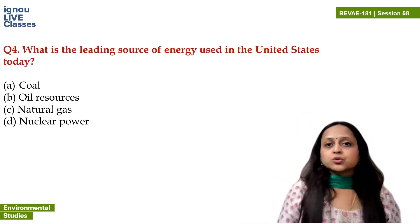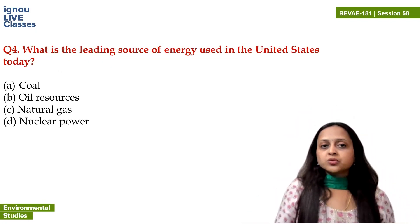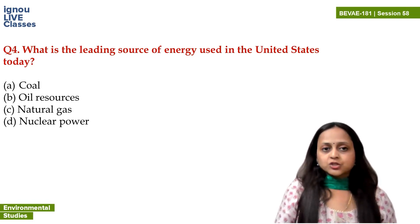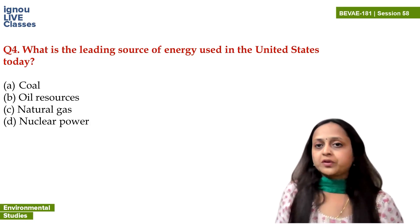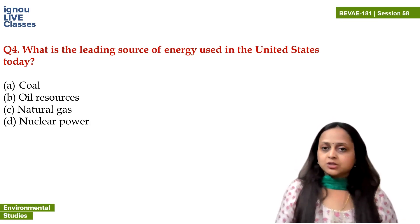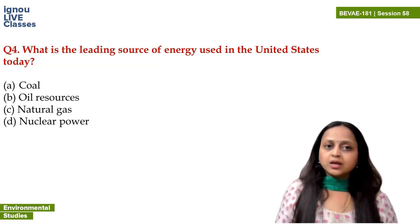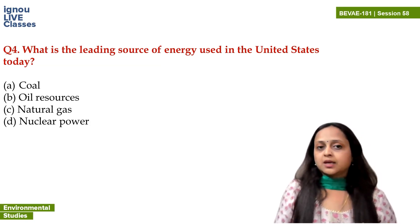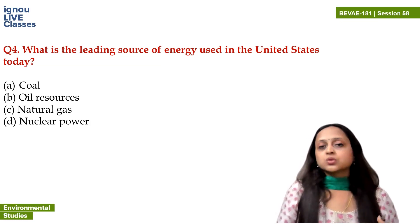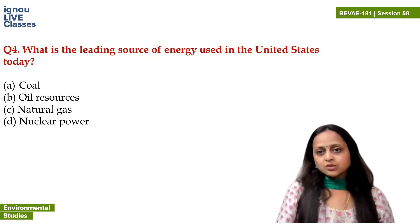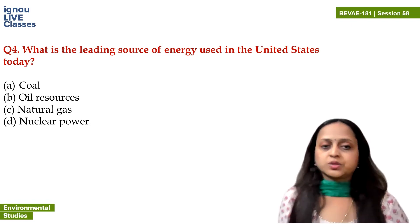What is the leading source of energy used in the United States today? Options are coal, oil resources, natural gas, and nuclear power. The main source of energy in the United States is oil, accounting for 28 to 30% of energy. After that comes coal, then other sources of energy. So the answer is oil resources.